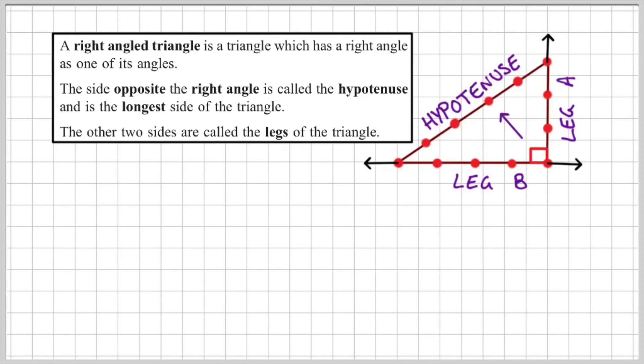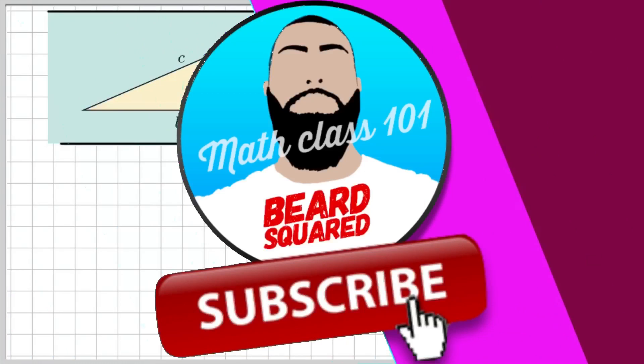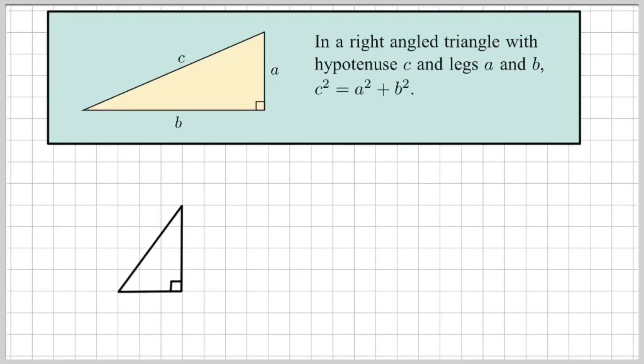Okay, so let's remove that and summarize. In a right angle triangle with hypotenuse C and legs A and B, we can have the formula C² = A² + B². So I'm going to explain this formula in more detail. So what this formula is saying is that the square of A plus the square of B must equal the square of C.